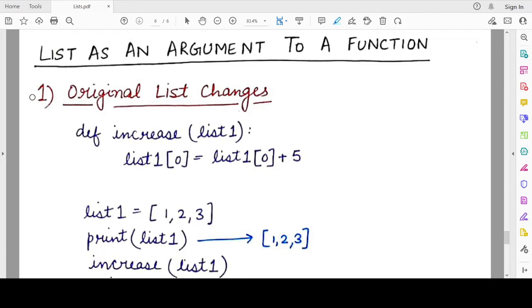The first scenario is when you pass a list as an argument to a function, the original list changes. The second scenario is when the original list does not change.